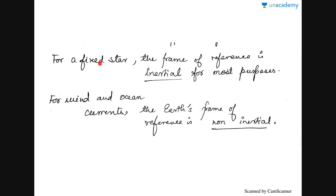For a fixed star in space, the frame of reference is also considered inertial. There is an exception for terrestrial phenomena: for wind and ocean currents on the Earth's surface, the Earth's frame of reference is considered to be non-inertial. Remember this for wind, ocean currents, and all related motion and dynamics. This concludes what I have to cover for inertial and non-inertial frames of reference. I hope you are understanding — do comment below regarding any improvements or what more you want from this course. Thank you.